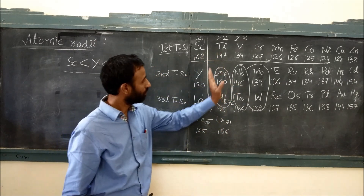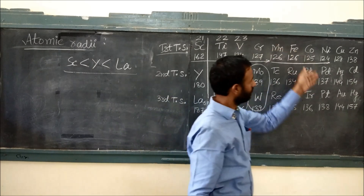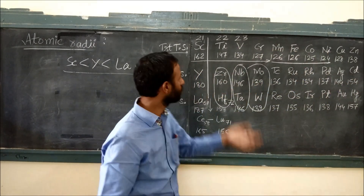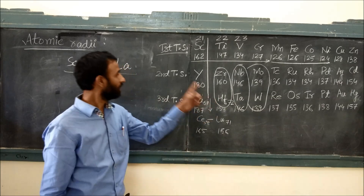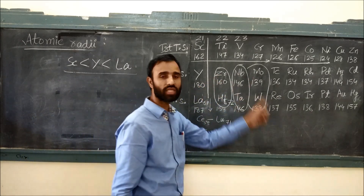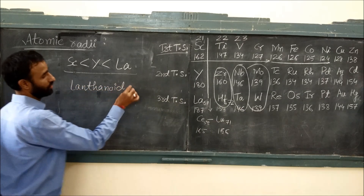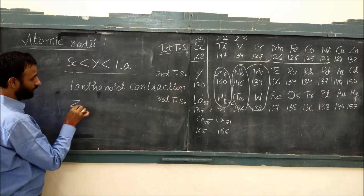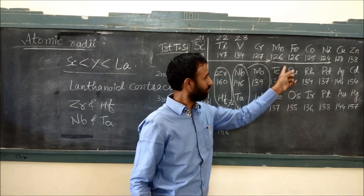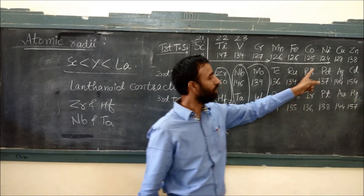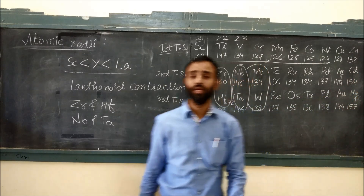When we go from the first to the second transition series, there is an increase in size — simple reason: number of shells increases, and that effect dominates over nuclear charge. But the second and third transition series have almost similar size. It is because of lanthanoid contraction. For example, zirconium and hafnium, niobium and tantalum, technetium and rhenium, ruthenium and osmium, rhodium and iridium, palladium and platinum, silver and gold, cadmium and mercury — all have almost the same size.